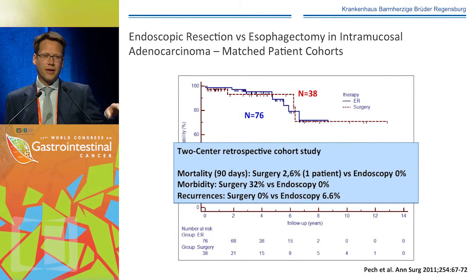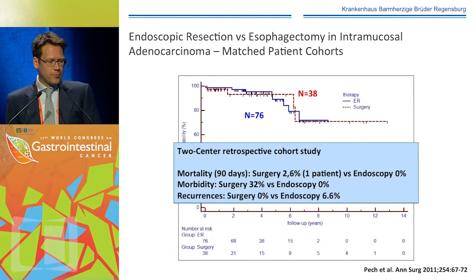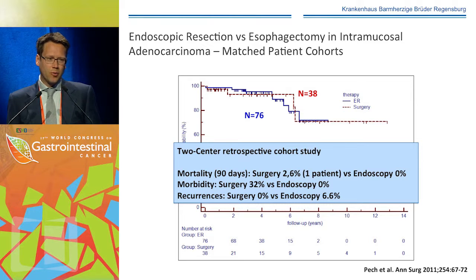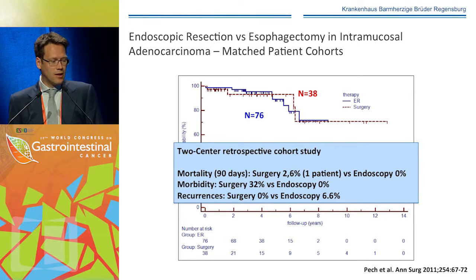A problem in the Mayo study was that patients unfit for surgery were treated endoscopically. Therefore, we performed a matched pairs cohort analysis with the University of Cologne — a major esophageal surgery center in Germany — matching 76 patients from our endoscopically treated cohort by age, gender, infiltration depth, differentiation grade, and Charlson comorbidity index. Surgery had a slightly higher but non-significant mortality rate. Morbidity was significantly higher at 32% versus 0% in the endoscopy group. The recurrence rate was higher in the endoscopy group, but all recurrences were successfully re-treated endoscopically.